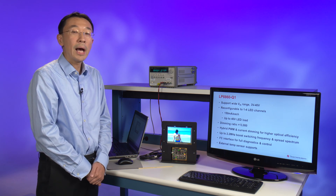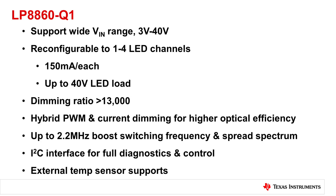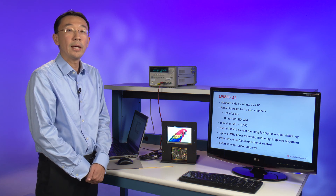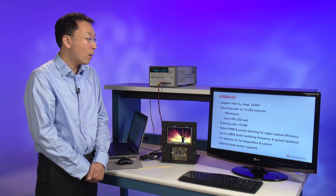Next I would like to highlight the LP8860's important features. First, it can support automotive battery voltage from 3 volts up to 40 volts. It can do reconfigurable up to one to four LED channels. Each channel supports 150 milliamps up to a 40-volt LED load. It can achieve a world-class dimming ratio of 13,000 to 1. It can also support up to 2.2 megahertz boost switching frequency with spread spectrum, which is important for the head unit display. One last feature is that it supports I2C for full diagnostics as well as control.